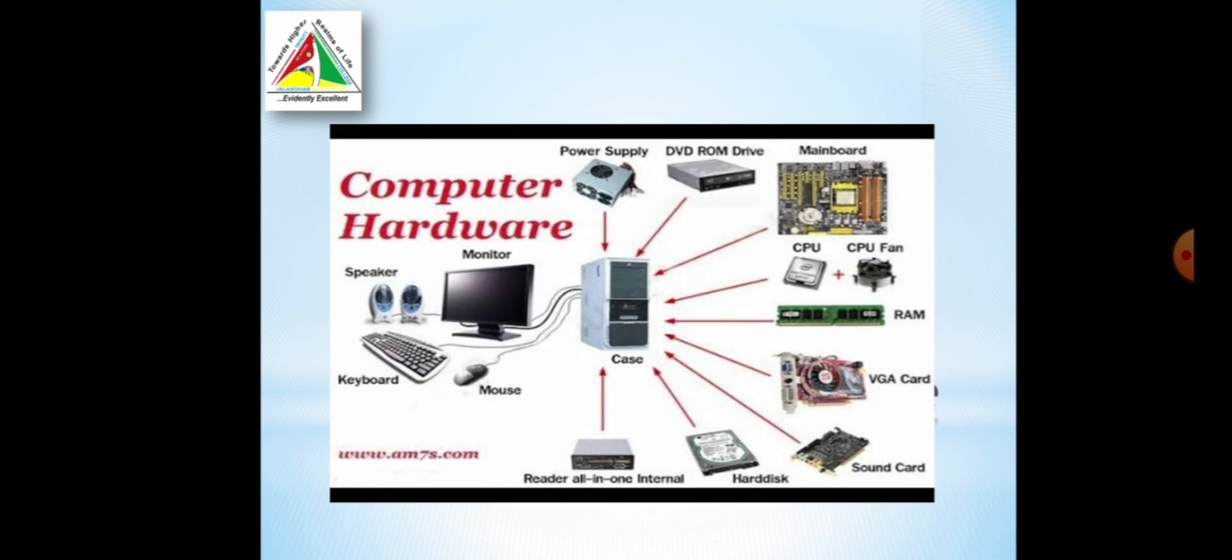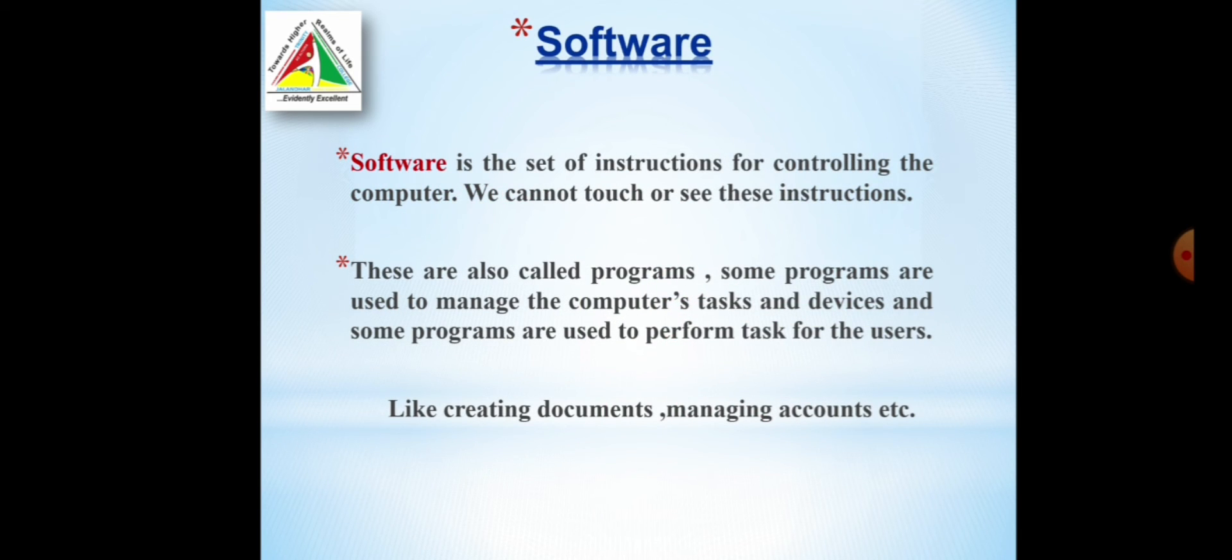Software is the set of instructions controlling the computer. We cannot touch or see the instructions. Software is a kind of instruction. Software basically is an instruction that we give to the computer. Through this instruction, the computer processes the data or it performs all the tasks. The software is also called programs. Some programs are used to manage computer's tasks and some programs are used to manage the user's tasks.